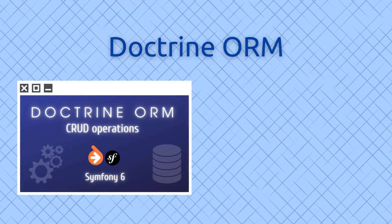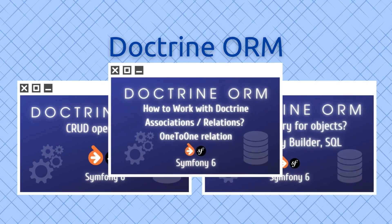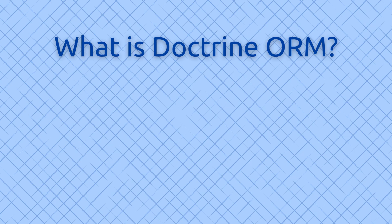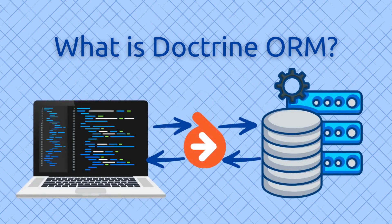I already have some basic tutorials on how to use Doctrine ORM in Symfony, and the link will appear in the top right corner. But today our focus is on gaining a deeper understanding of this technology. Doctrine ORM, or Object Relational Mapper, is a library that helps developers manage the database in PHP applications by abstracting database interactions into objects. It follows a data mapper pattern, allowing developers to map database tables to PHP classes and rows to instances of those classes, enabling interactions with the database through objects rather than raw SQL.